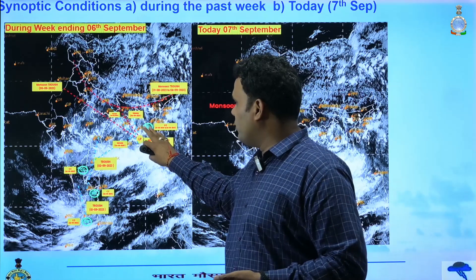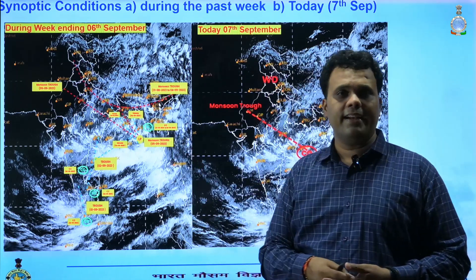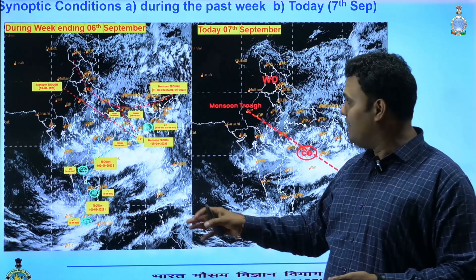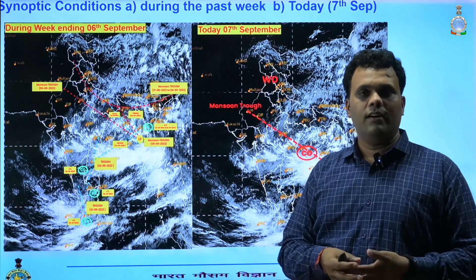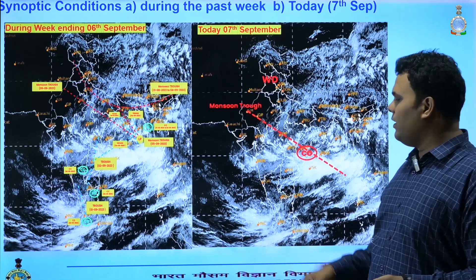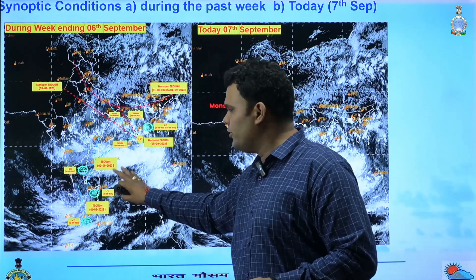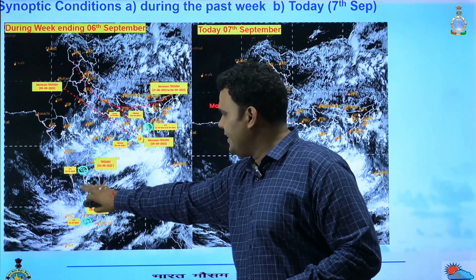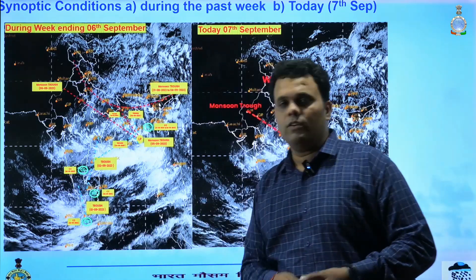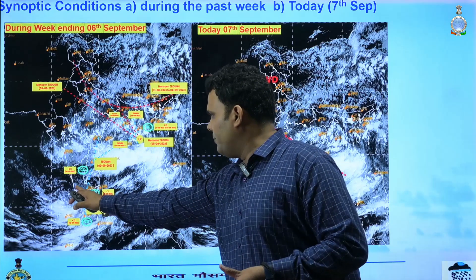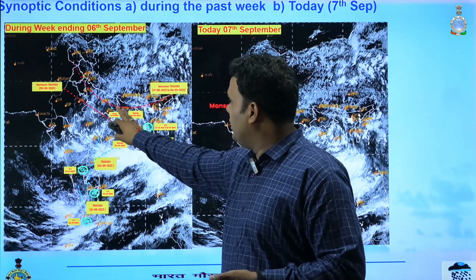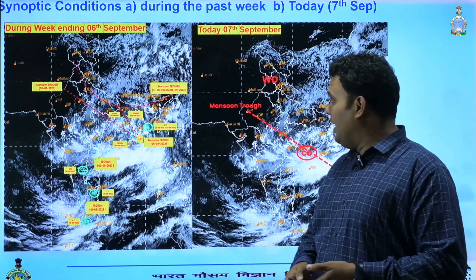Among other systems, a cyclonic circulation formed over the northern parts of the Bay of Bengal on the 1st and 2nd, and a low pressure area formed around the 5th of September over the north Bay of Bengal. This low pressure area lasted for only one day and is now lying as a cyclonic circulation over interior Odisha and neighborhood. On the southern side of the country, there was a cyclonic circulation over Nicobar which formed on the 2nd of September, a second circulation over northern parts of Tamil Nadu, and another over the Comorin area. There were also troughs from southern Karnataka to the Comorin area on the 1st, and two troughs extending from the low pressure area on the 5th — one towards southeast Uttar Pradesh and one towards Telangana.